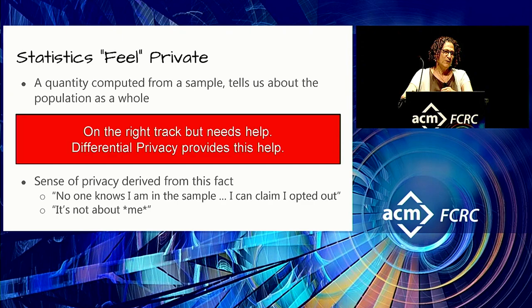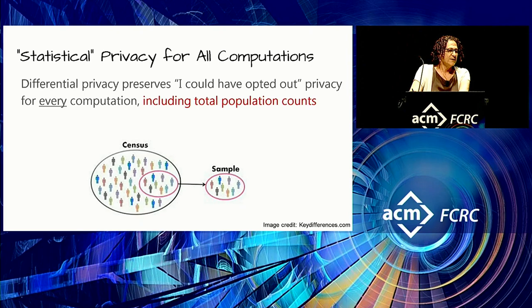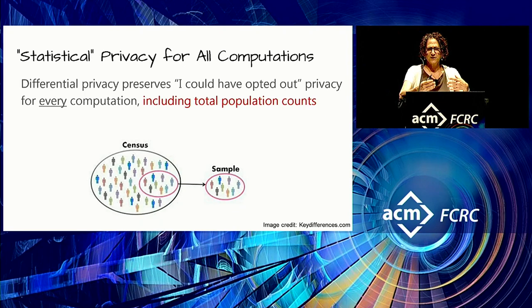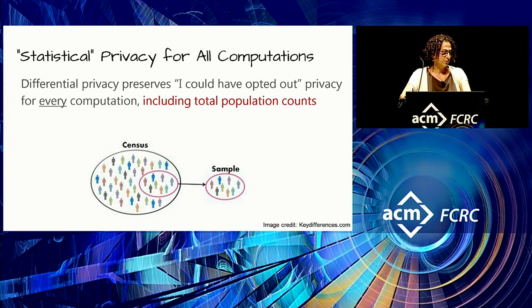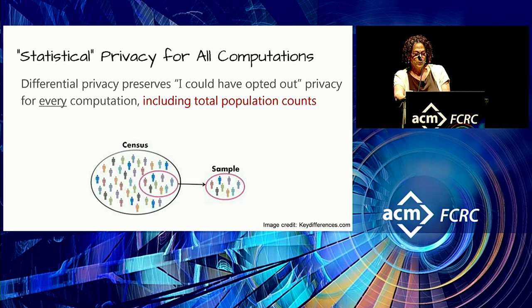This intuition that statistics are inherently privacy-preserving is on the right track but needs some help. Differential privacy provides this help. Differential privacy ensures statistical privacy for all computations. In some settings nobody's allowed to opt out — for example, in a census no one can opt out; it's supposed to be an enumeration of the entire population. Yet differential privacy will preserve the 'I could have opted out' privacy semantics for every computation, including total population counts.